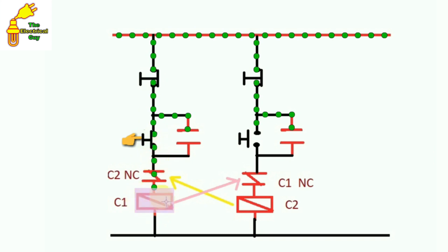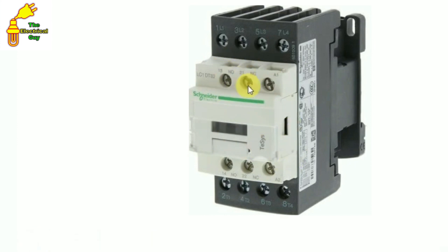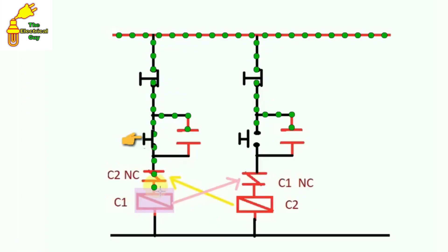Now let's press the start push button. The moment we press the start push button, current starts flowing and lets C1 contactor turn on. When C1 contactor turns on, some changes take place in C1. The NO contact becomes NC and the NC contact becomes NO. So the C1 NO contact here will become NC, and the C1 NC contact here becomes NO — the circuit gets open. Now when this contactor turned on, this contact becomes NC and this one becomes NO.